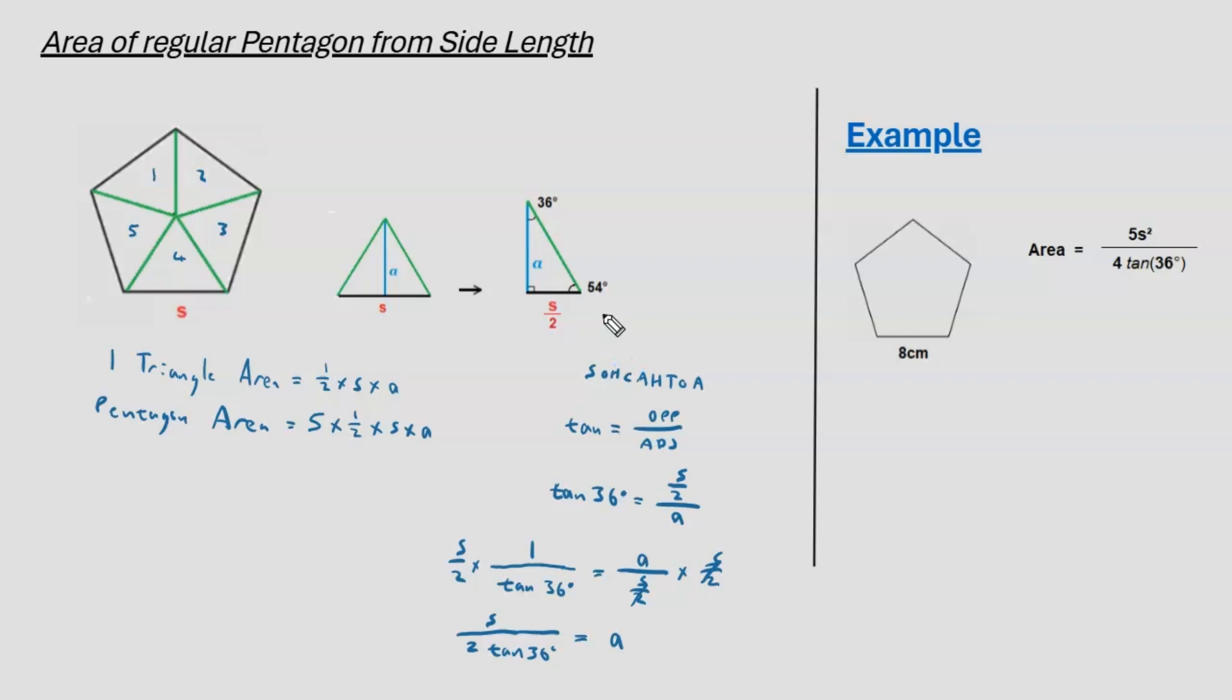So, using one of the smaller right angle triangles that one of the smaller equal sized triangles divides into, we have now got an expression for A that is in terms of S. So, we can look to put all this information we have now together. From here, we have 5, multiply by 1 half, multiply by S.